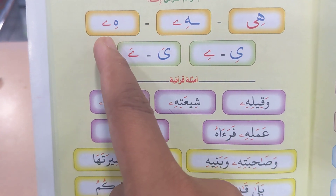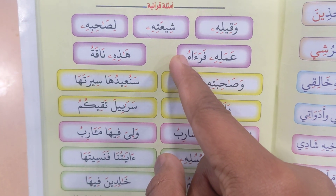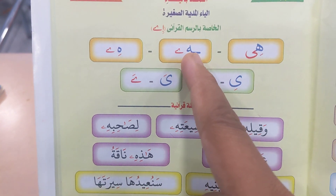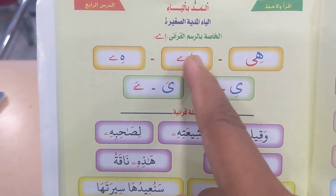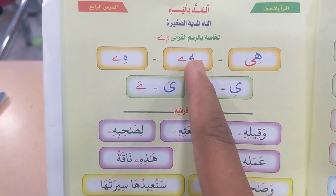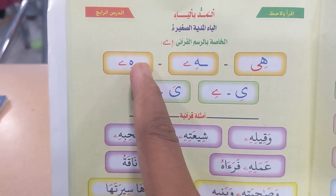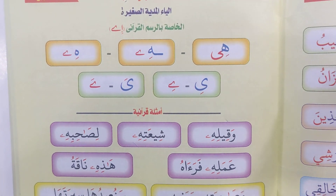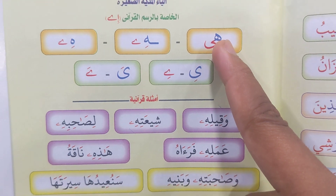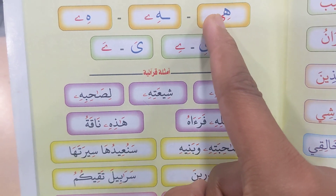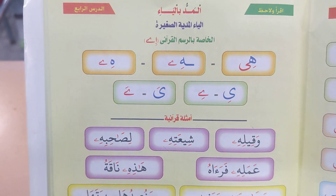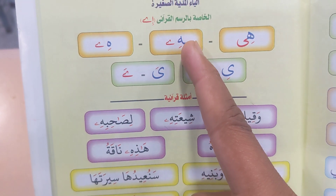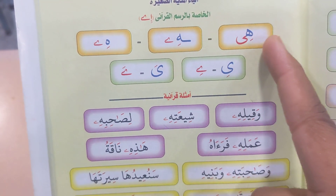When it is the last letter of the word — and that is in most cases. Because this Ha is the last letter of the word. You have the beginning position of Ha here, and the middle position of Ha, and then the end position of Ha when connecting it with other letters. So the Maddiya Sagheera comes after Ha in its final form.